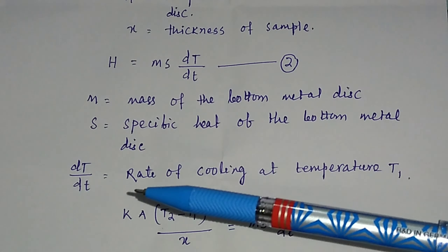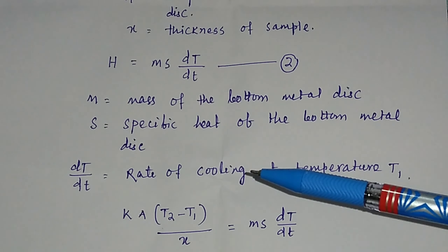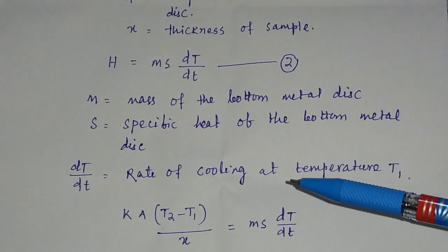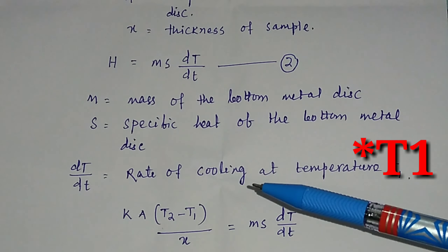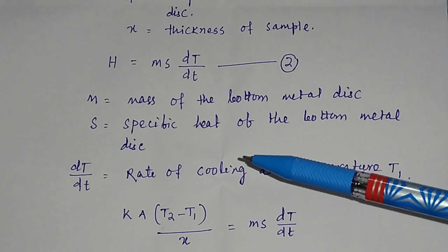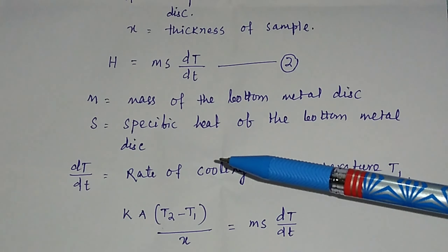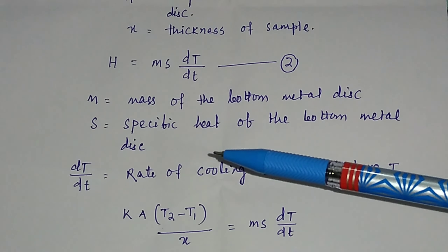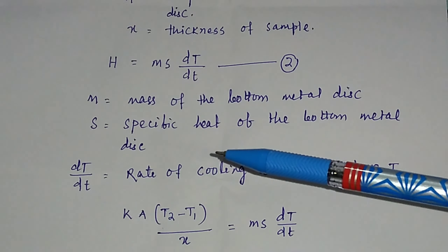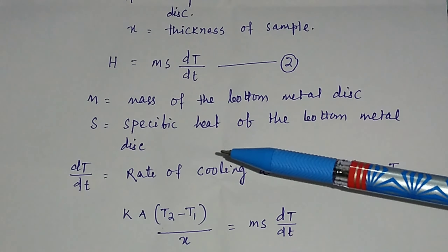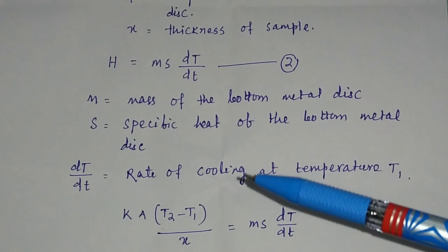dT/dt is the rate of cooling at temperature T1. Using the thermometer, you can find the rate of cooling. You measure the fall in temperature at a time interval of 30 seconds, draw a table recording the temperature at each 30-second interval.